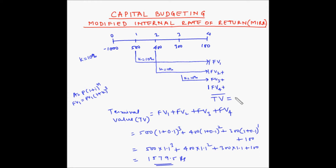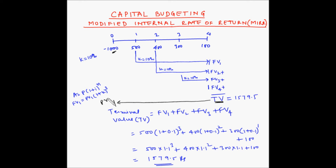So the terminal value is 1,579.5 rupees — this is the combined future value of all cash inflows at the end of the project's tenure. Now we need to find the rate of return at which the present value of this terminal value equals the project cost of 1,000 rupees. In other terms, the present value of the terminal value must equal the present value of the cash outflows.